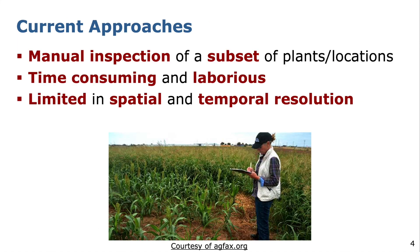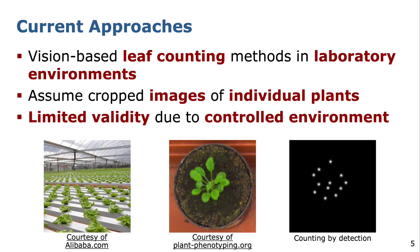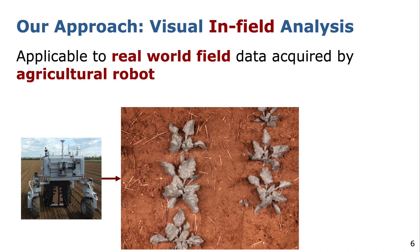Especially in the context of plant breeding, the number of leaves is often assessed by manual inspections in the field at a subset of locations, which is not only time consuming but also limited in spatial and temporal resolution. Other vision-based approaches rely on images taken in laboratory environments which capture single plants and apply methods to detect the leaves. However, this data has limited validity since the environment is highly controlled in comparison to data captured on real agricultural fields.